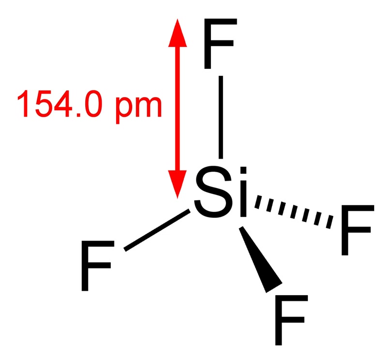Silicon fluoride is a byproduct of the production of phosphate fertilizers, resulting from the attack of HF on silicates, which are present as impurities in the phosphate rock.